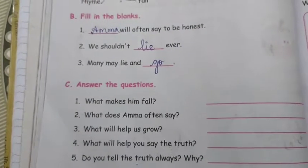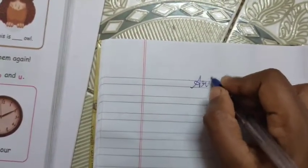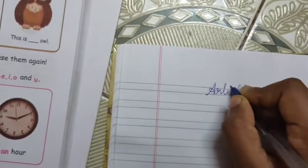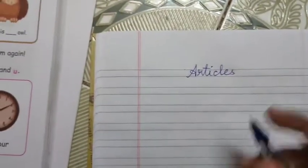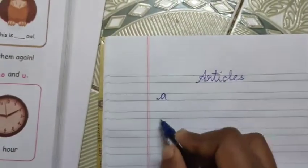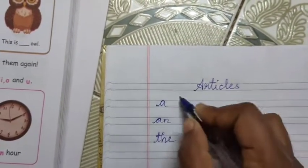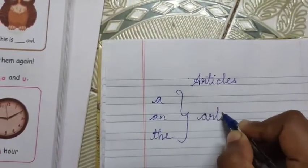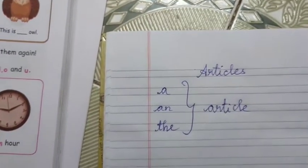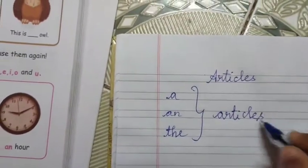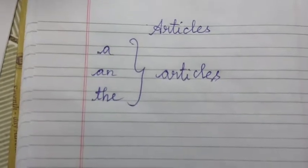So now we are going to learn about articles. Articles. So what are articles? A, an, and the — all these are articles. So now we are going to learn when we have to use 'a', when we have to use 'an', and when we have to use 'the'.